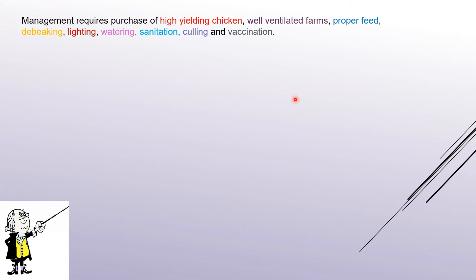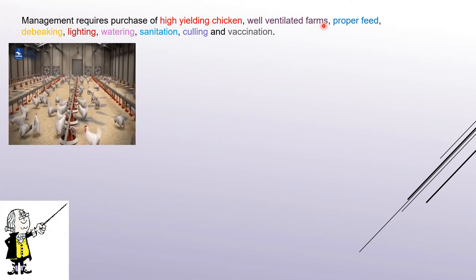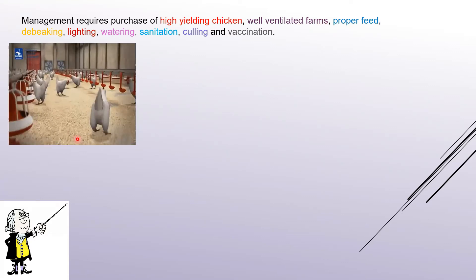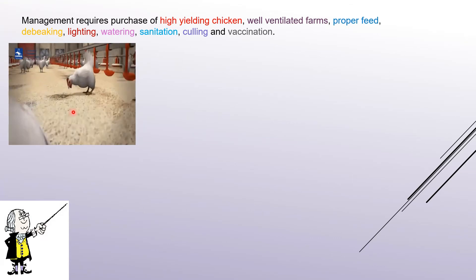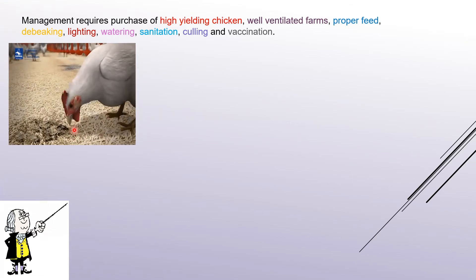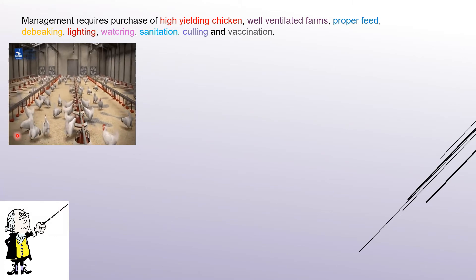If you are planning to open your own poultry farm, what requirements will you keep in mind for your business to be successful? The first requirement is proper space and area in which you will involve high-yielding chickens. A well-ventilated farm is very important. Cleanliness and hygiene are also very necessary.